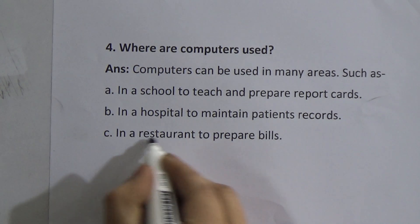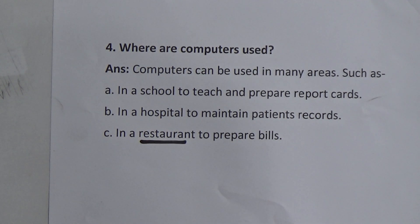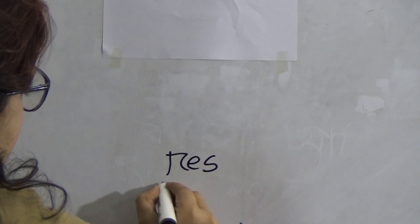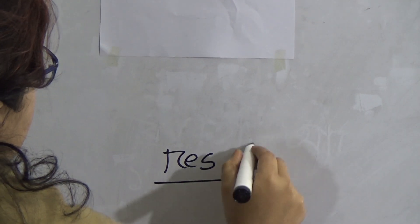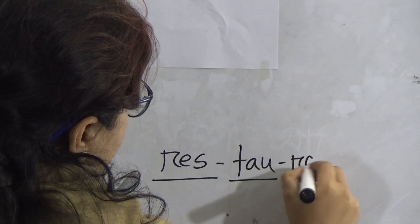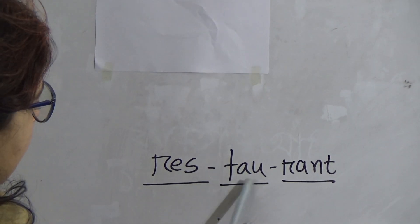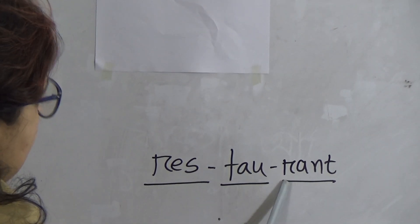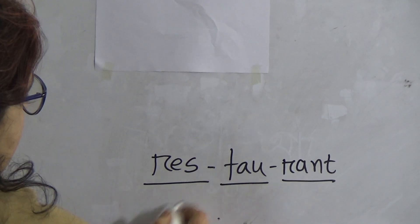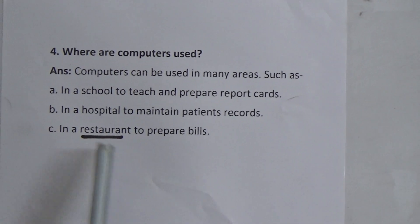Dear learners, look at this spelling — it is quite difficult, so you have to learn it. Restaurant: R-E-S-T-A-U-R-A-N-T. Break it into syllables: 'res' — 'tau' — 'rant'. There are three syllables. When a spelling is difficult, you have to learn it by breaking down the syllables: res-tau-rant.